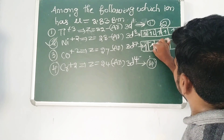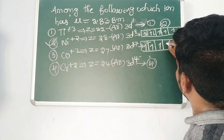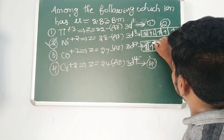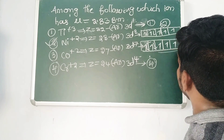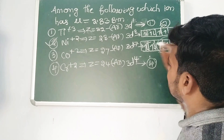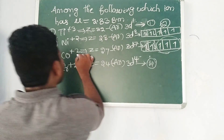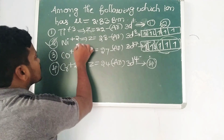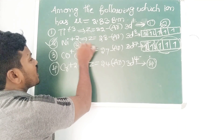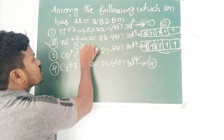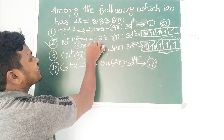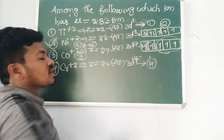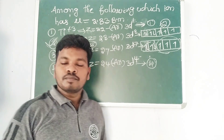For Co²⁺ with 3d⁷: one, two, three — three unpaired electrons. So Ni²⁺ with 3d⁸ has two unpaired electrons, giving a magnetic moment of 2.83 Bohr magnetons. Therefore the answer is Ni²⁺.